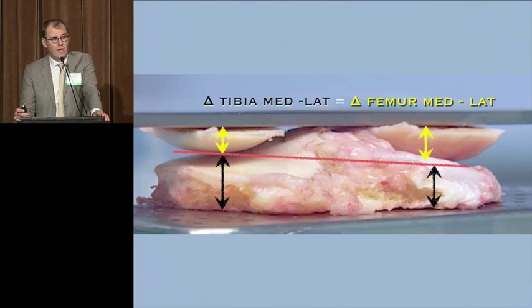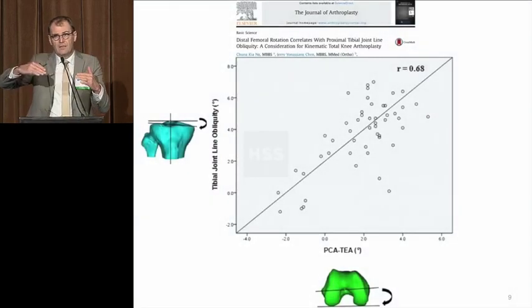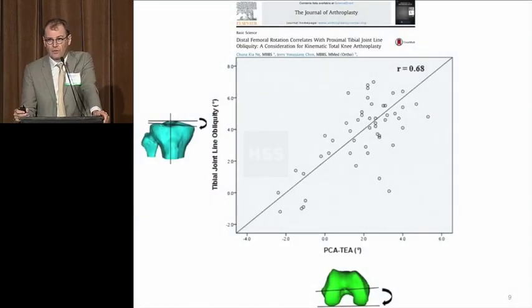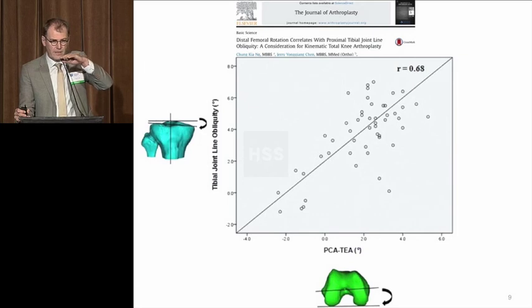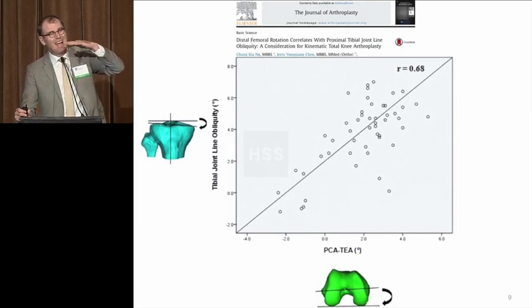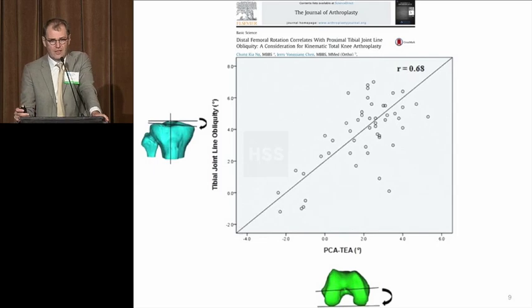But if you have more proximal varus on the tibia, you will need to add more external rotation on your femoral component. That is exactly what was shown in this paper in the Journal of Arthroplasty: as the proximal varus increases, the condylar twist angle — the angle between the posterior condyle tangent and the trans-epicondylar axis — is also increasing. So patients tend to have differential rotation in their distal femur as they have more proximal varus.